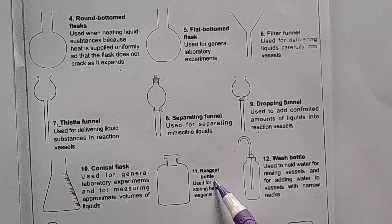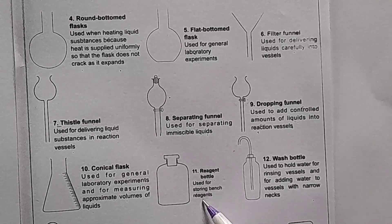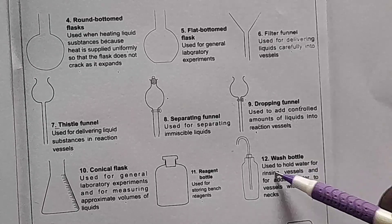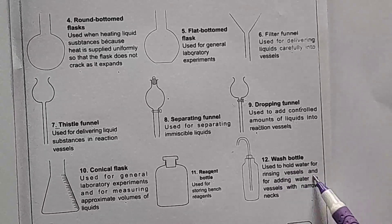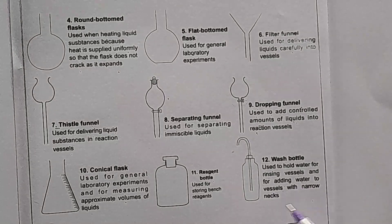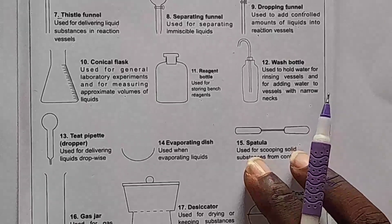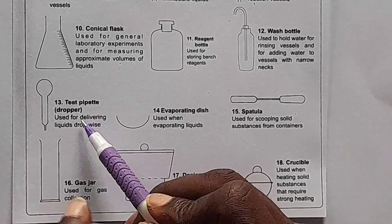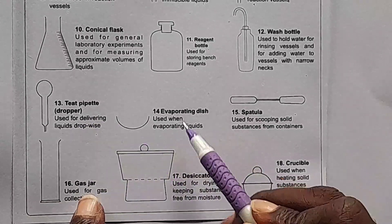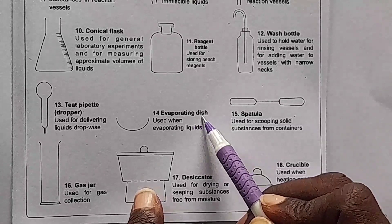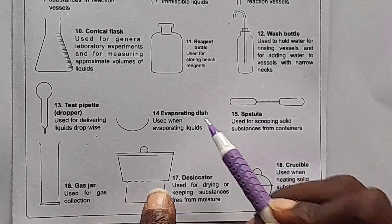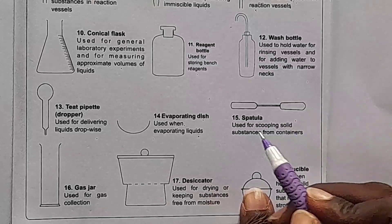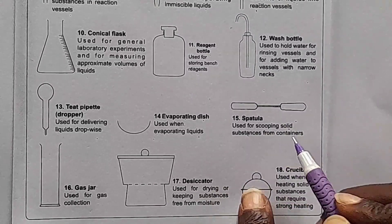Here we have reagent bottles. A reagent bottle is used for storing bench reagents. Next, number twelve, we have a wash bottle. A wash bottle is used to hold water for rinsing vessels and for adding water to vessels with narrow necks. Then, number thirteen, we have a teat pipette, also known as a dropper. A dropper is used for delivering liquids drop-wise. Here, we have an evaporating dish, or you can say a watch glass. It's used when evaporating liquids.